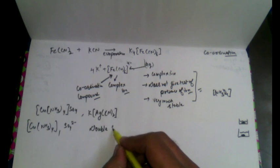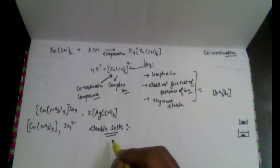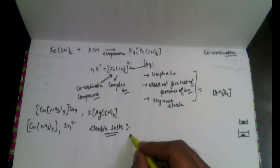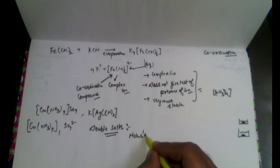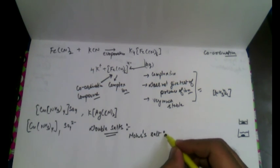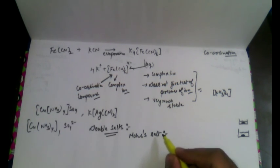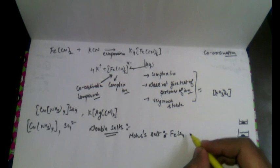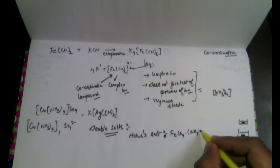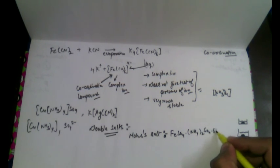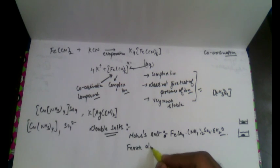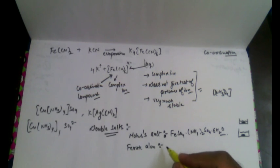Double salts are those which give the test of the presence of ions present in a molecule. One common example is Mohr's salt, named after Mohr, one of the finest scientists in the field of chemistry. They prepared this salt, and wherever you find this combination, you can at once identify it as Mohr's salt.